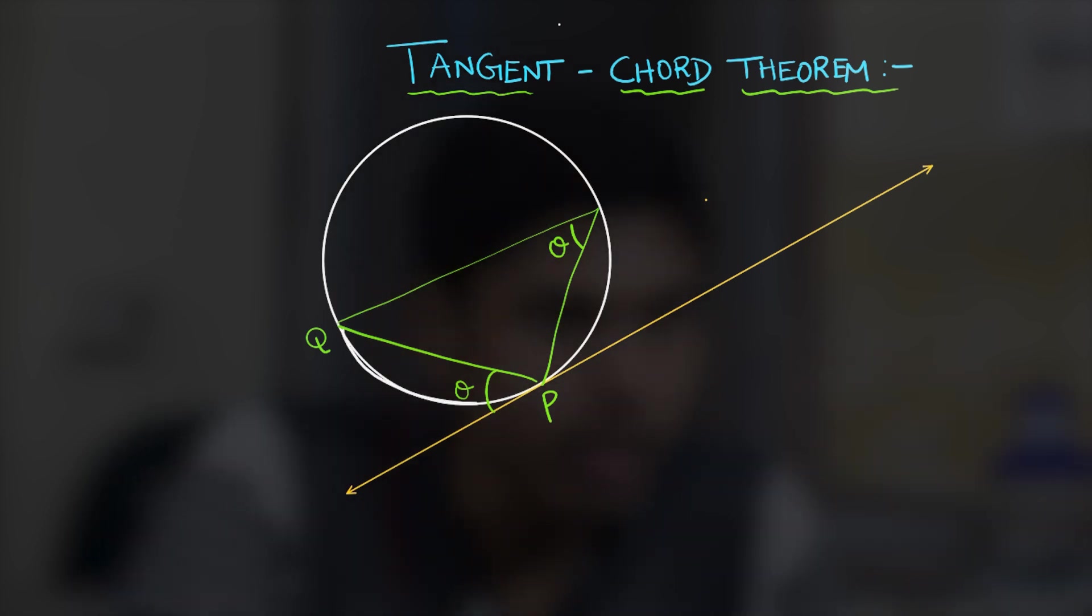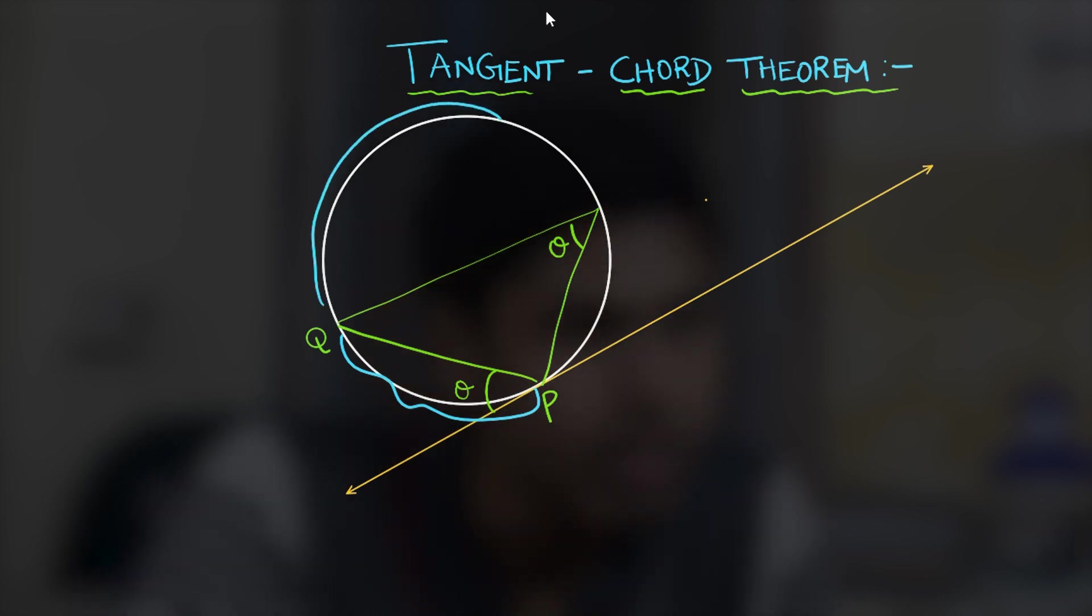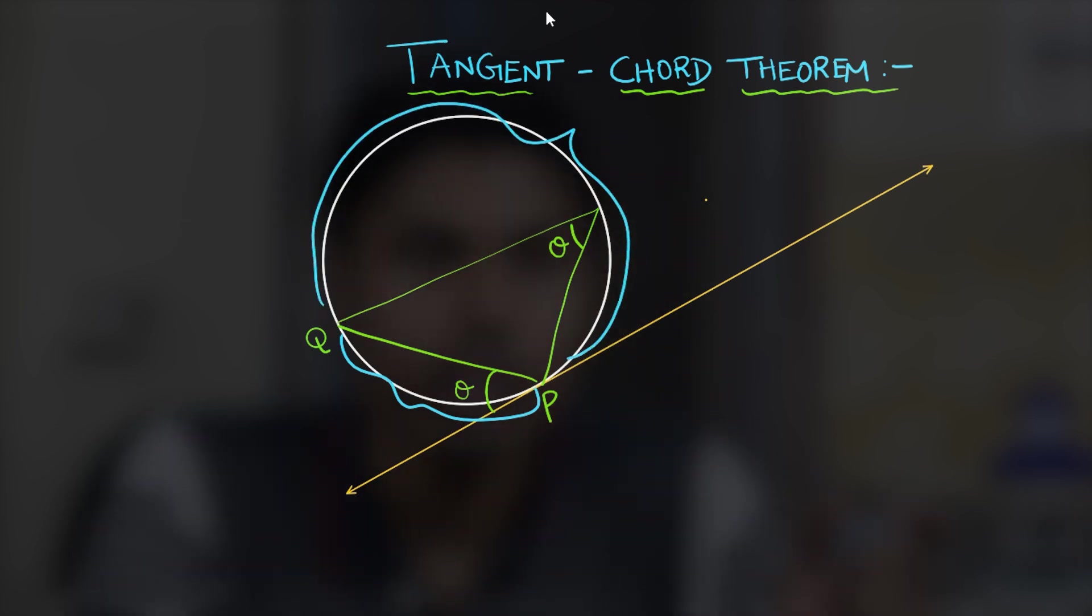So you could see this arc pierces through the angle that is under consideration. Hence the angle subtended at this arc should be considered for the tangent chord theorem.